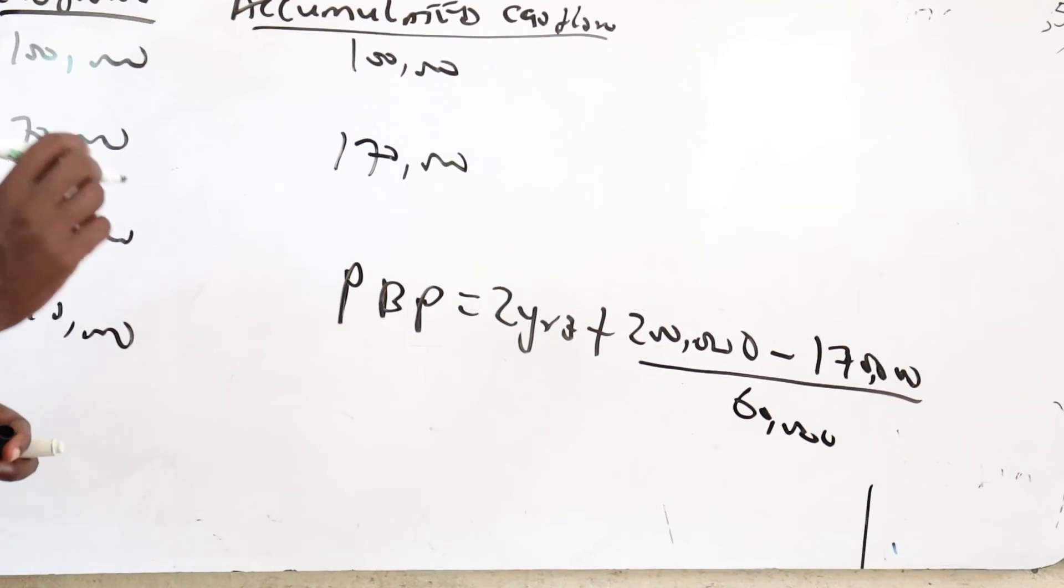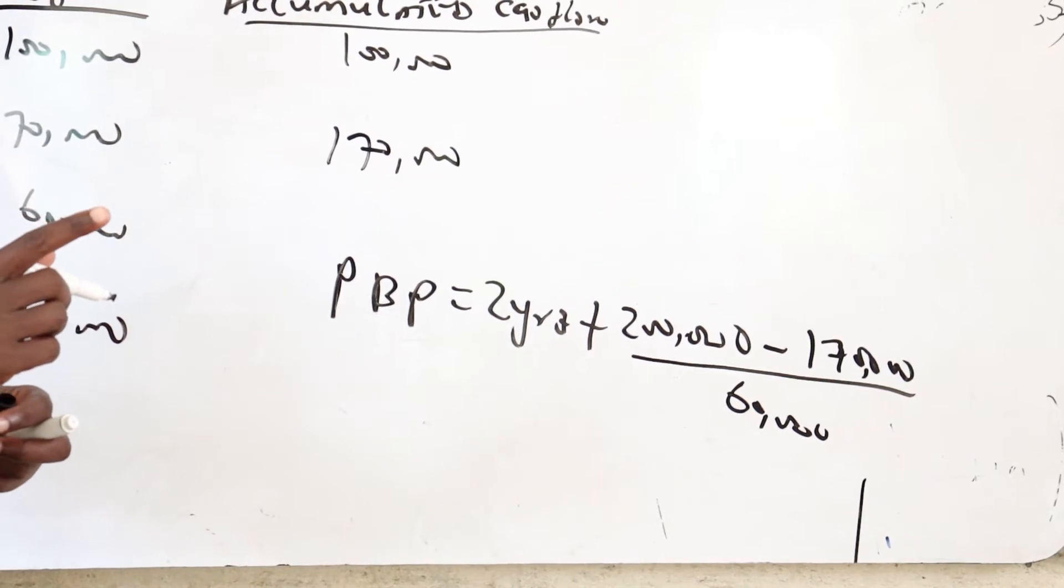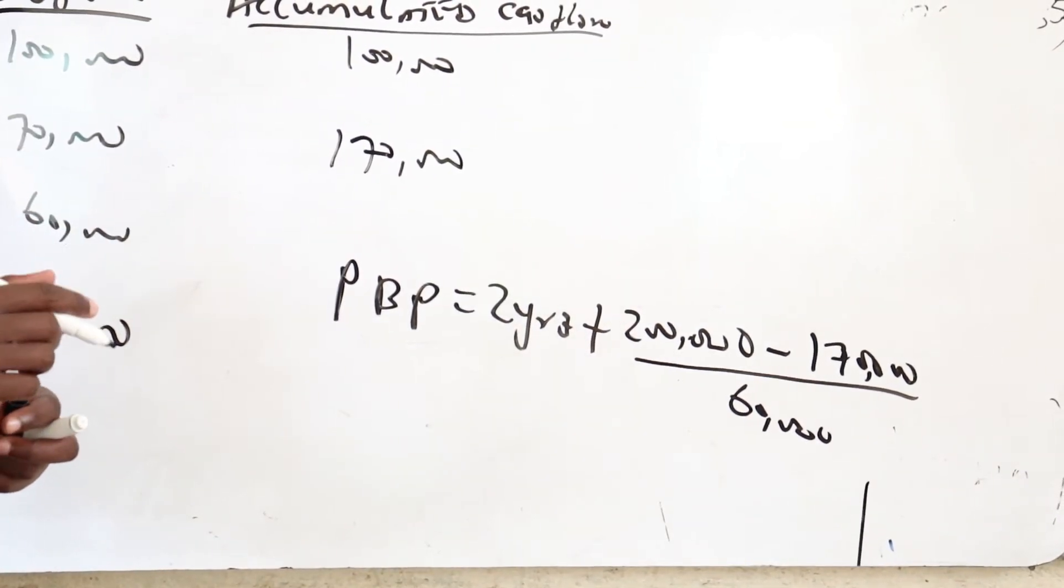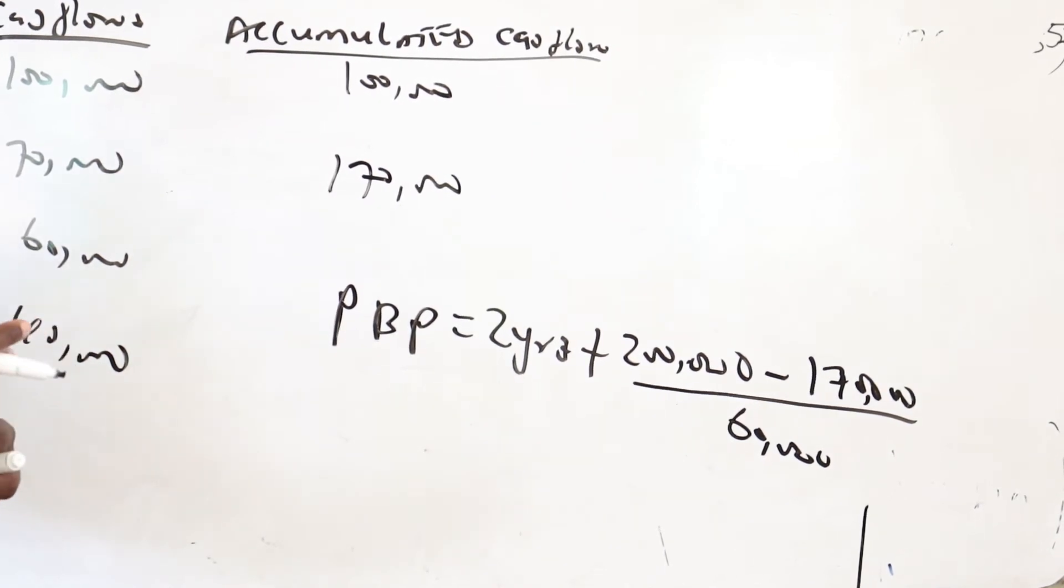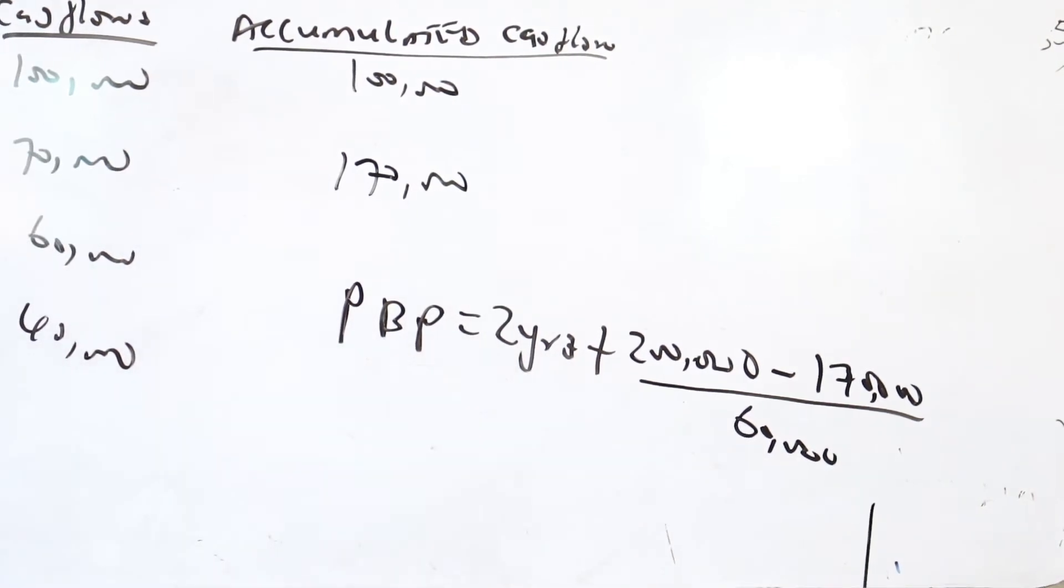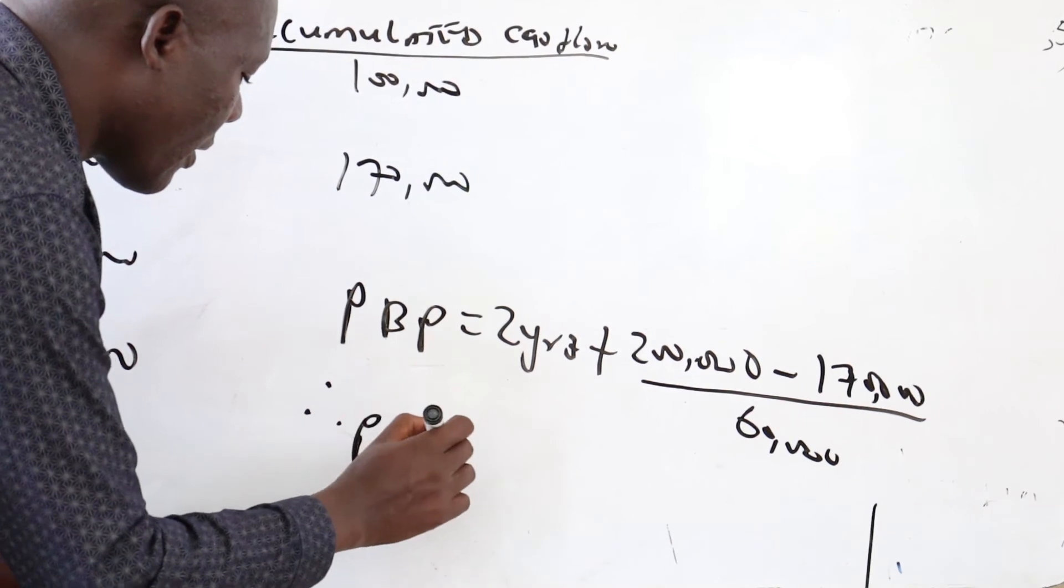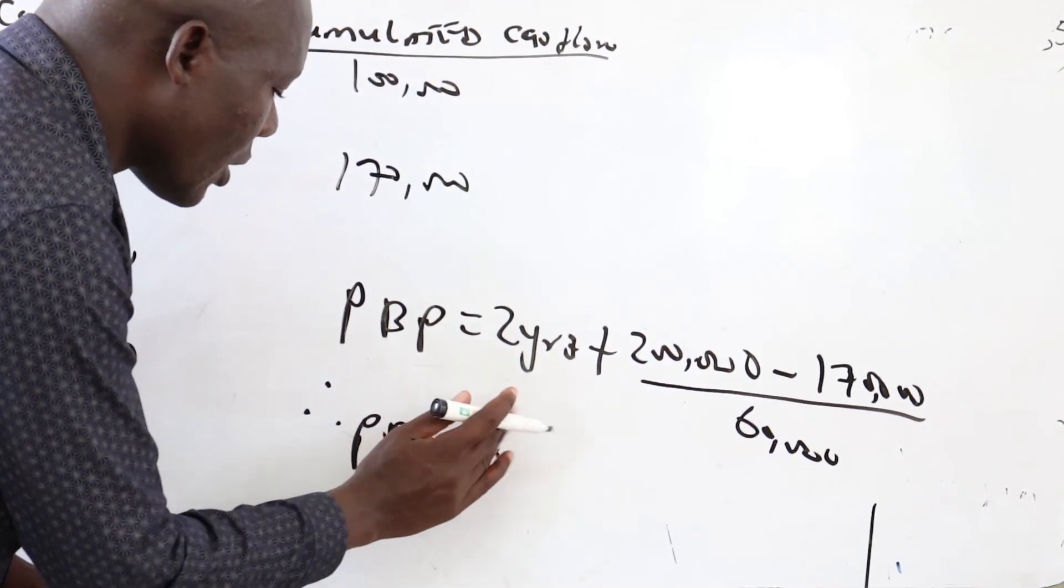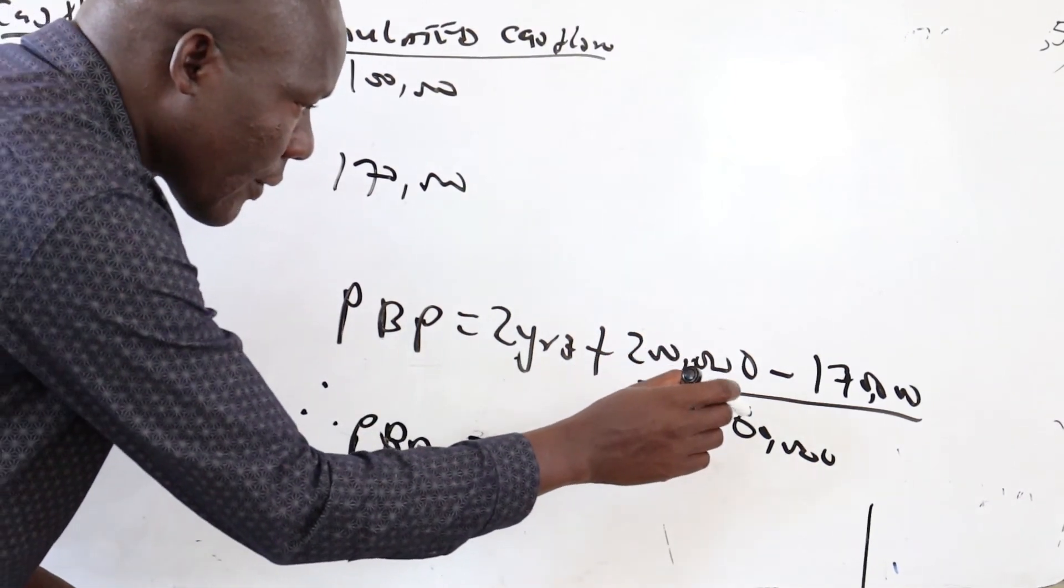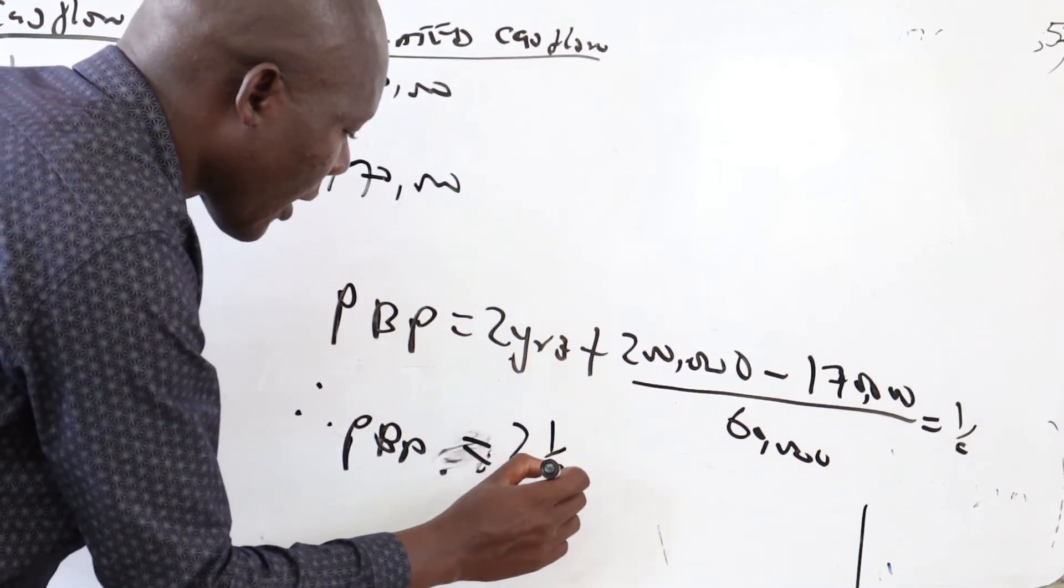So now, 200,000 minus 170,000, we will remain with 30,000. So 30,000 over 60,000, that is the same as a half. So it is like a half plus two years. So we'll have 2.5 or two and a half years, the payback period. Therefore, our payback period will be these two years plus a half. 30 divided by 60 will be a half. So it will be two and a half years.